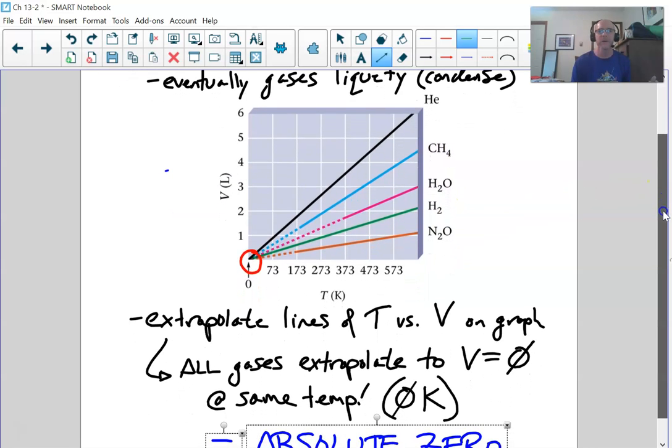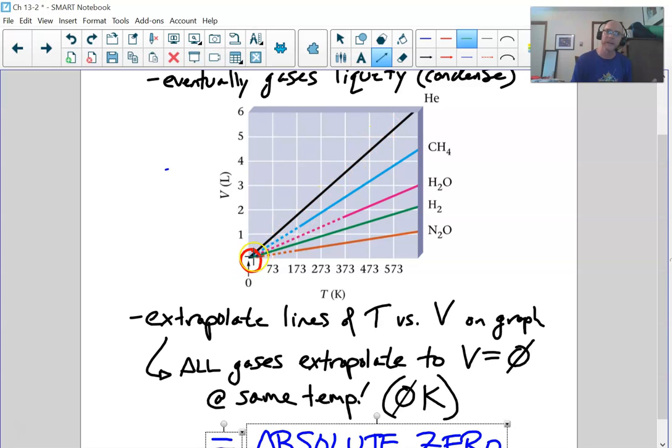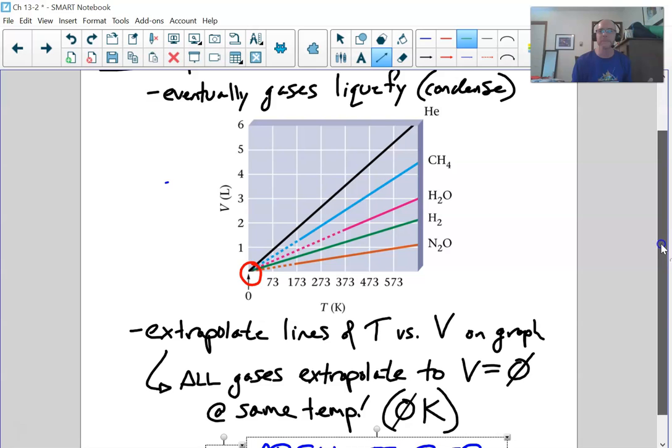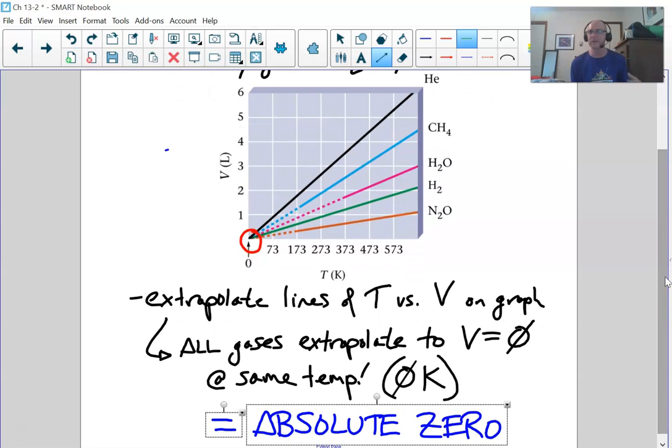How can you have matter with zero volume? This was the first sort of inkling of this idea called absolute zero. If you take any gas, it can be helium or methane or water vapor, and if you cool it down and extrapolate the lines back to where they all meet, they meet at the origin where the temperature absolute zero is zero and the volume in liters is also zero. This is one of the reasons why the idea of absolute zero may be a made-up thing, something we can never observe. Notice some of these lines are dotted because if you keep cooling a gas down, eventually it'll condense to a liquid.